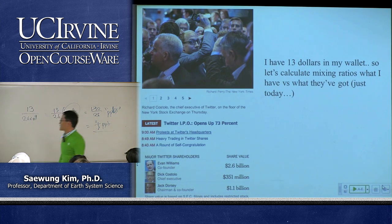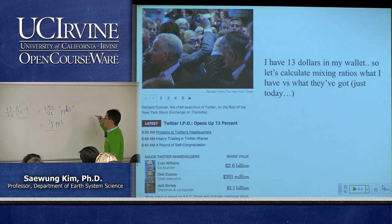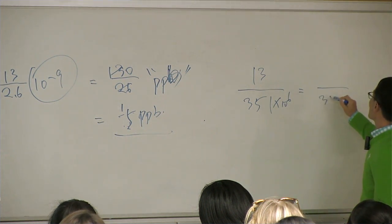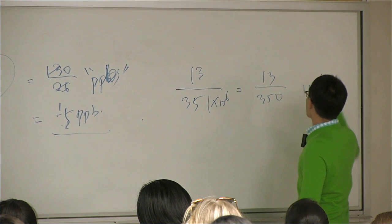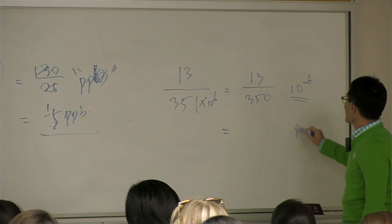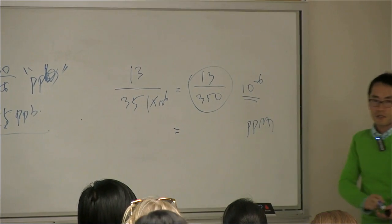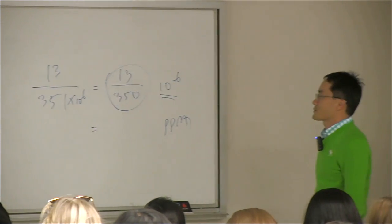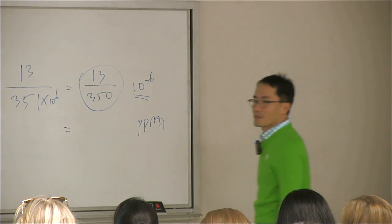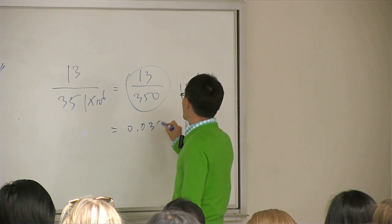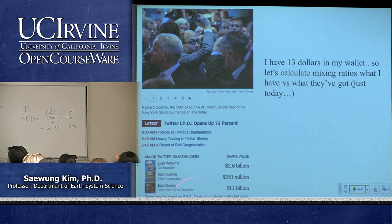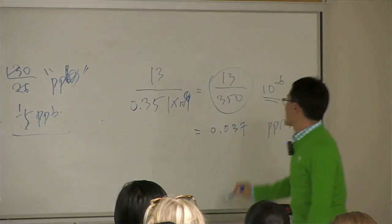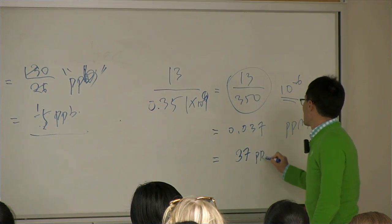How about the smiley guy? He earned $351 million today. So 13 divided by 351×10⁶ — that's 10 to the minus 6, which by definition is PPM. 13 divided by 350 is 0.037 PPM. Or equivalently, 0.351×10⁹ gives 37 PPB.